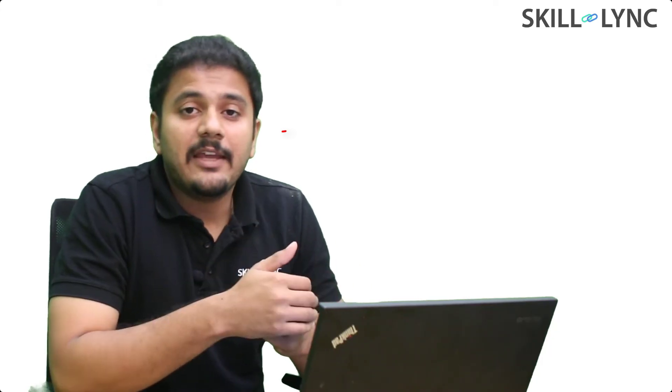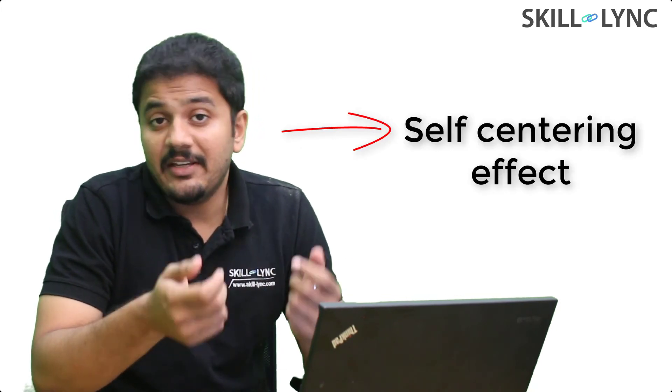Now having a positive KPI gives rise to something called as self-centering effect. So basically with positive KPI, your body tends to rise when you're steering and this basically gives you the self-centering effect. That is when you let go of the steering, the steering tries to come back to its original position.